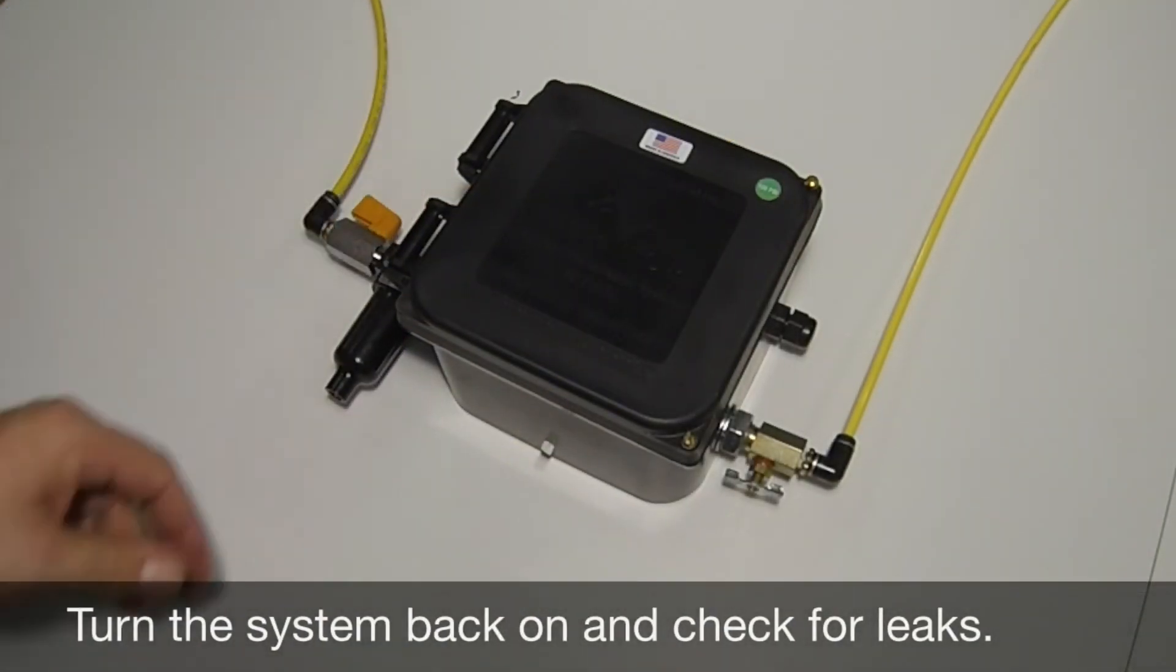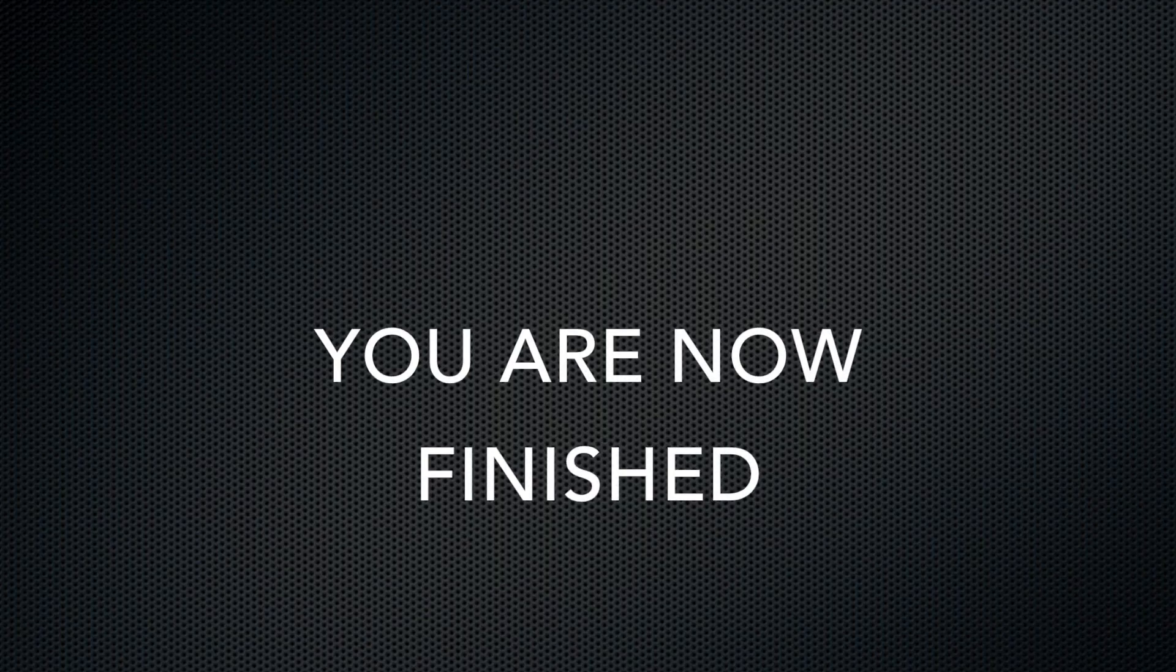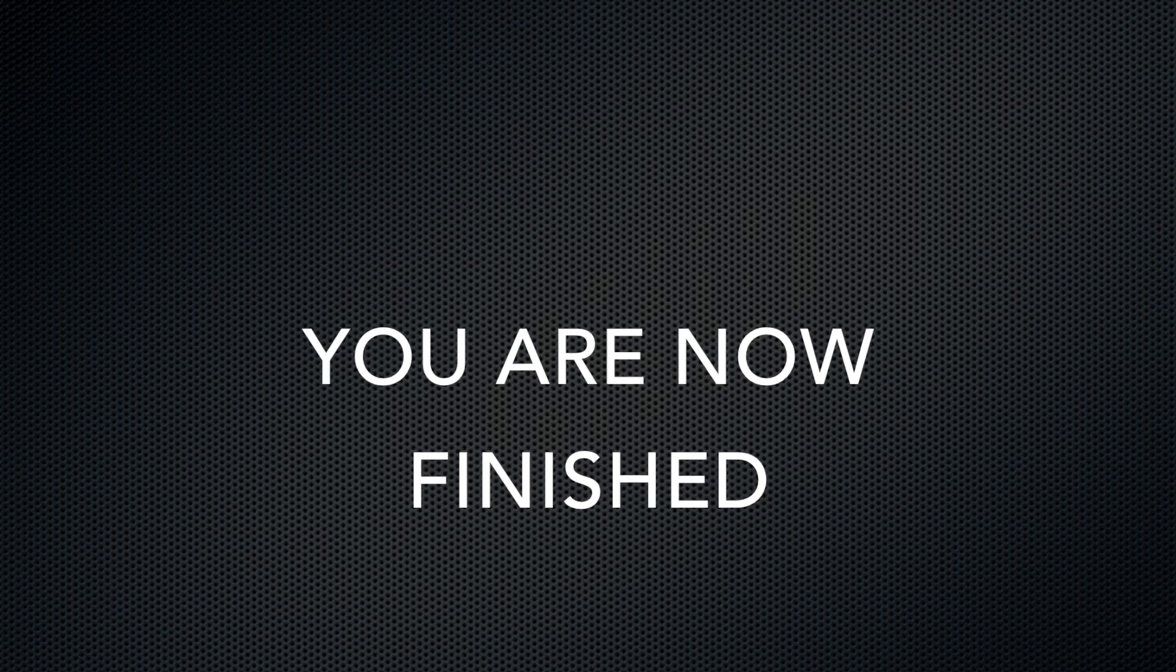Turn the system back on at the on-off valve on the supply side of the control box and check for leaks. After completing these steps you are now finished resetting the control box.